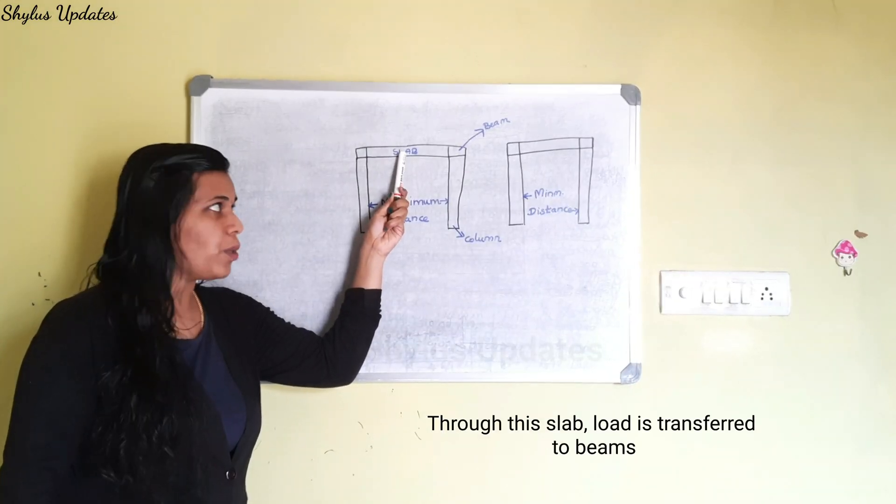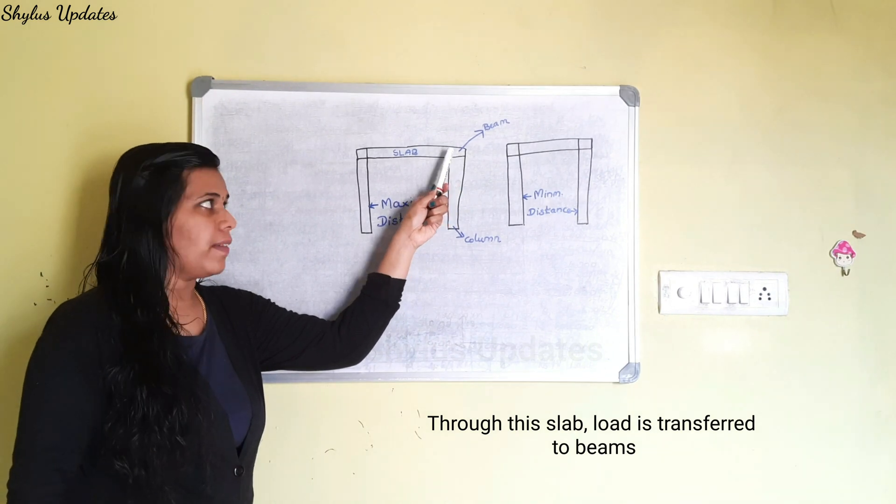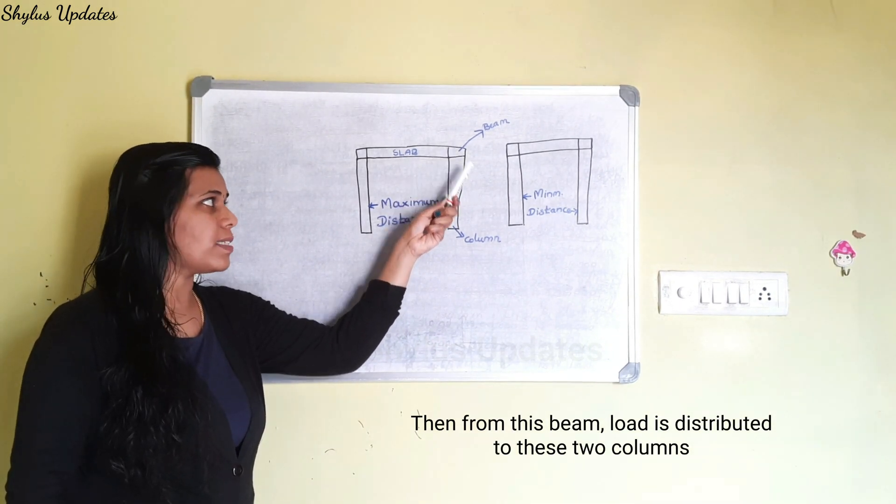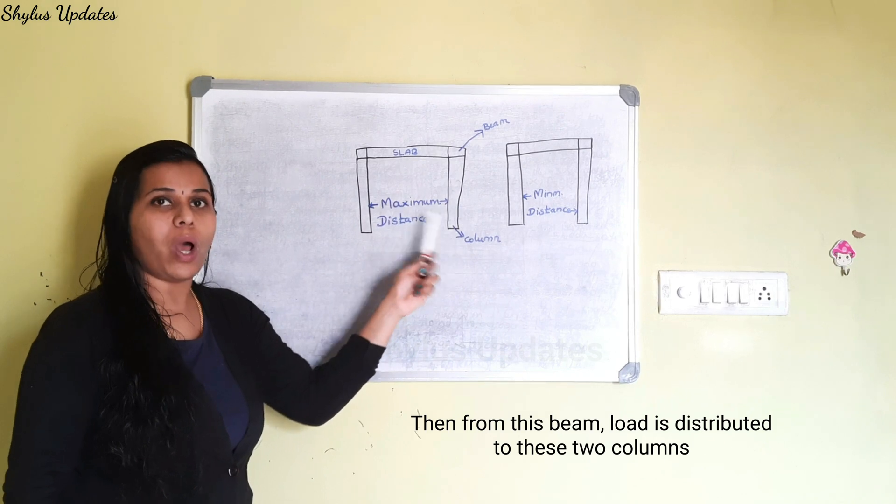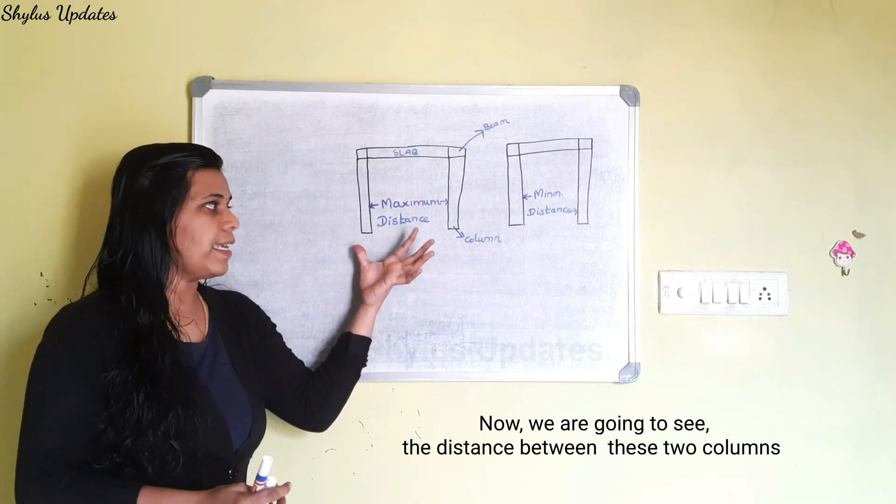This is a slab. Through this slab, the load is transferred to beam. Then from this beam, the load is distributed to these two columns. Now we are going to see the distance between these two columns.